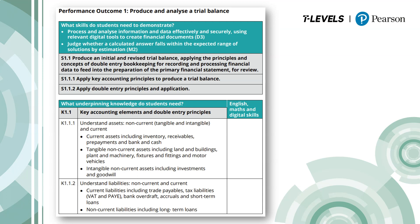This is an example of how the specification is laid out, showing the start of performance outcome one: produce and analyse a trial balance. At the very top, in the green box, we've included the skills from the general competency framework — you can see D3 and M2 in brackets, referencing the digital and maths skills. In the grey box we have the first specialist skill, S1.1: produce an initial and revised trial balance, applying the principles and concepts of double-entry bookkeeping for recording and processing financial data. S denotes skill, as opposed to knowledge (K), 1 because this is performance outcome 1, and .1 because this is the first specialist skill within the performance outcome.